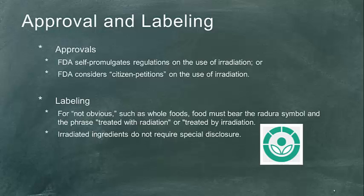The FDA has the expectation that the consumer will know there has been some processing to maintain quality and prevent microbial contamination such as E. coli. So for processed foods with irradiated ingredients, the FDA says there is no need for special disclosure. There are times when consumers could be eating irradiated ingredients as part of a food product and not know it. But if you're eating whole foods — salad, fruits — that have been irradiated, you will know. There are minor additional requirements to ensure the label is prominent and conspicuous, but otherwise it's pretty straightforward.